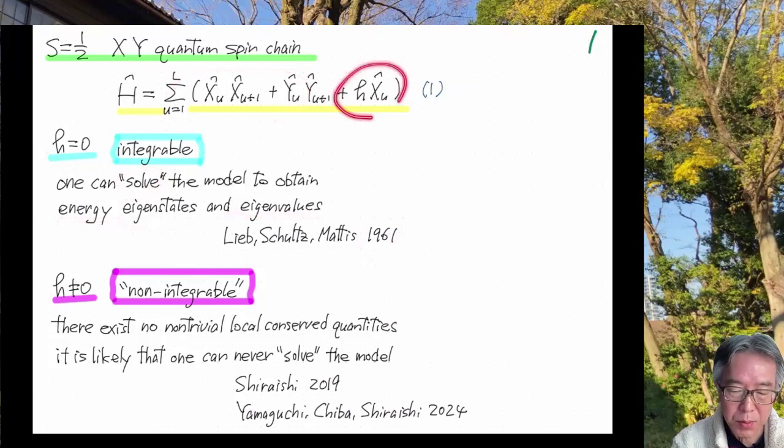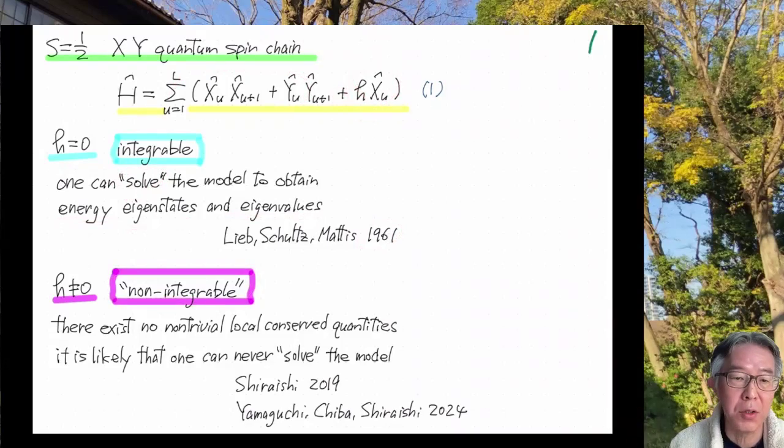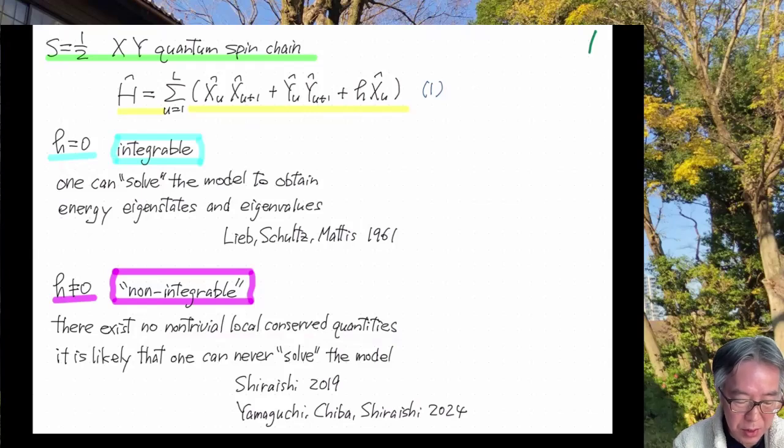But when this magnetic field in the x direction is non-zero, then I claim that this model is very likely to be non-integrable. More precisely, it is known that there exist no non-trivial local conserved quantities in this model. And this fact strongly suggests that this model can never be solved. And actually, this is a relatively new work, which goes back to 2019 paper by Naoto Shiraishi. And this statement itself was proved by Yamaguchi, Chiba, Shiraishi in 2024.